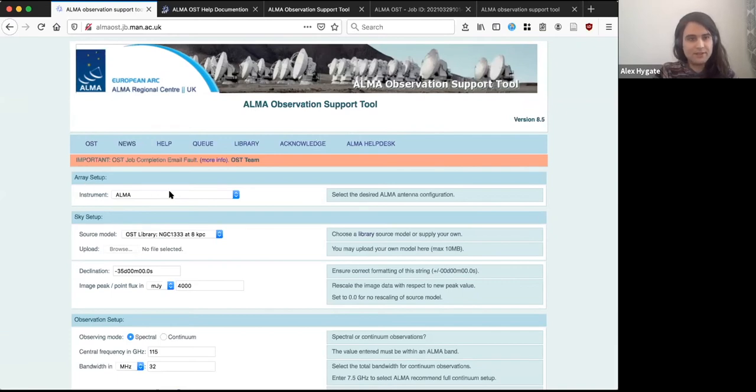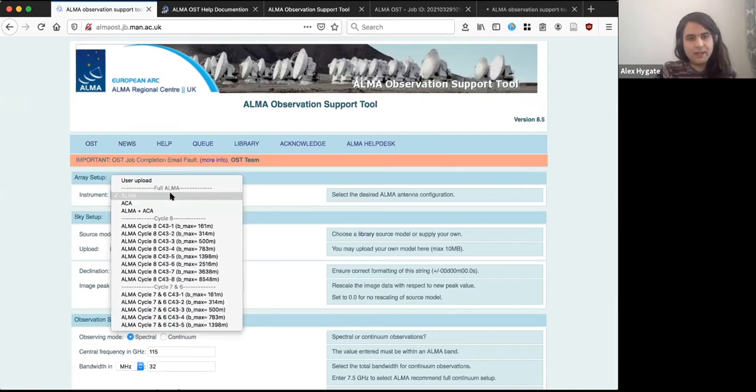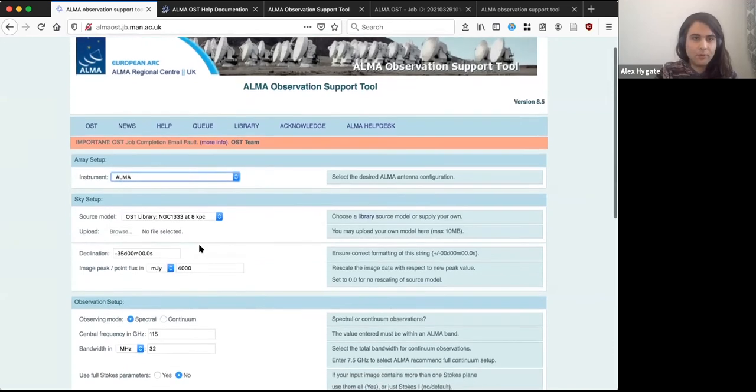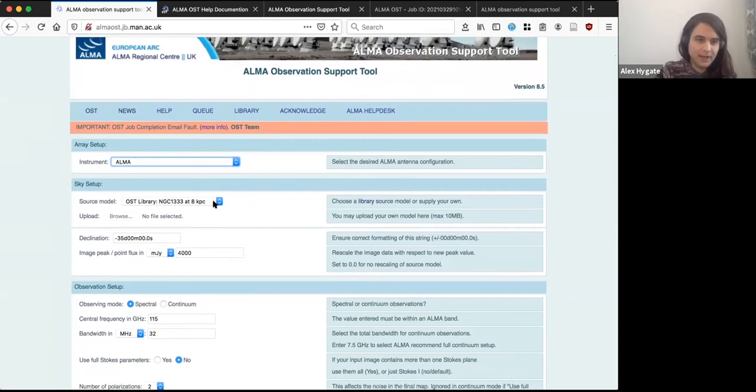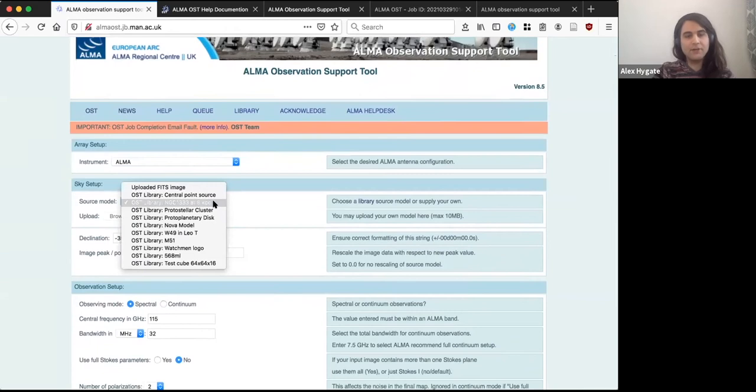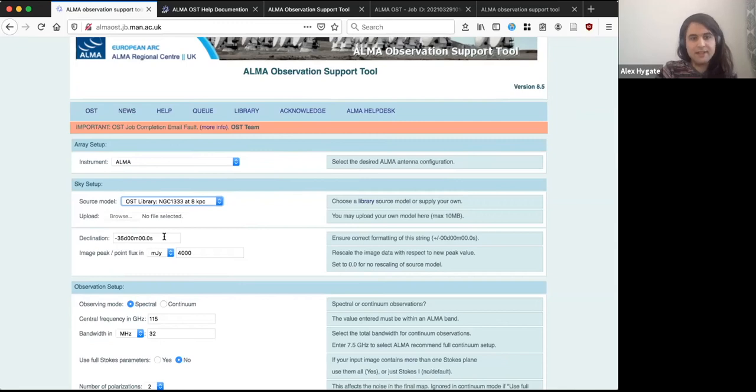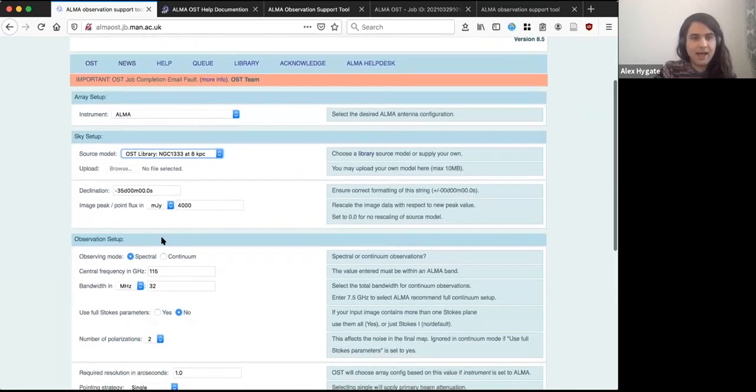And you can see that you get basically a form that you can submit here with different options. So the first key thing to look at is the instrument, you can either choose a specific configuration that you're interested in. So say you're interested in configuration five, and you want to simulate that. Or you can just say that you want to use ALMA, or the ACA or ALMA and the ACA. And the tool will select the appropriate configuration for you based on the resolution that you ask for. Now, one useful feature of the observation support tool is that there's a library of example sources, which makes it super easy to get going with simulations. And so you can either choose one of these library of models or upload your fits image, which will obviously give you better control over your model, and will be more appropriate for your particular observation.